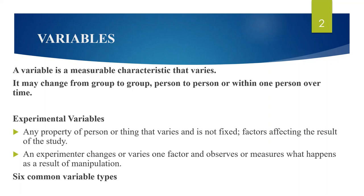As we all know, a variable is a measurable characteristic that varies. It may change from group to group, person to person, or within one person over time. Experimental variables are any property of a person or thing that varies and is not fixed — that is, factors affecting the result of the study.